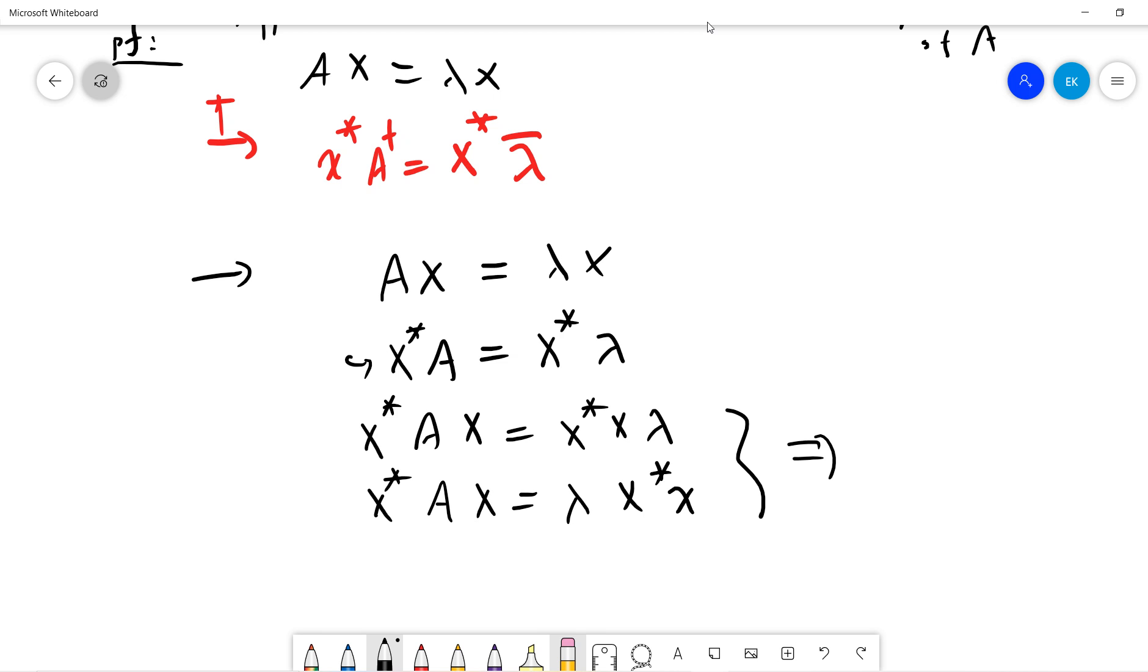From these two, we have lambda minus lambda bar x star x which is zero. By definition, since x is eigenvector, x dagger x is non-zero number.